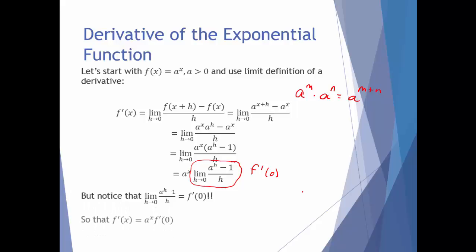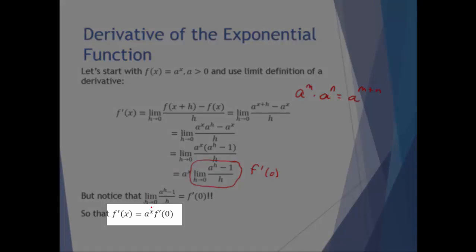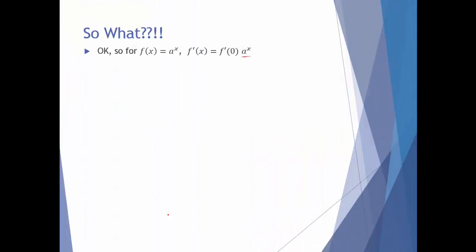That means for f of x equals a to the x, the derivative is that same a to the x times the derivative of the function evaluated at 0, which is f prime of 0. That tells us: if we start with an exponential function, the derivative contains the exact same exponential function times a number — f prime of 0 is just a number. So the rate of change of any exponential function is proportional to the function itself.